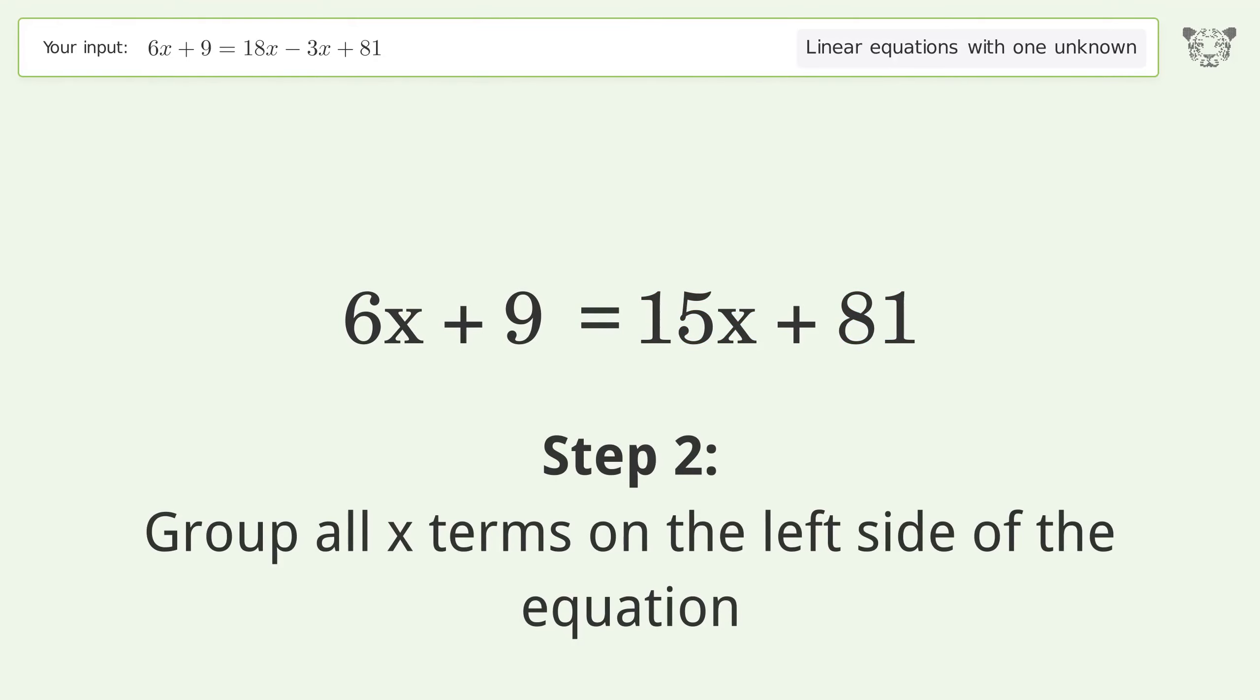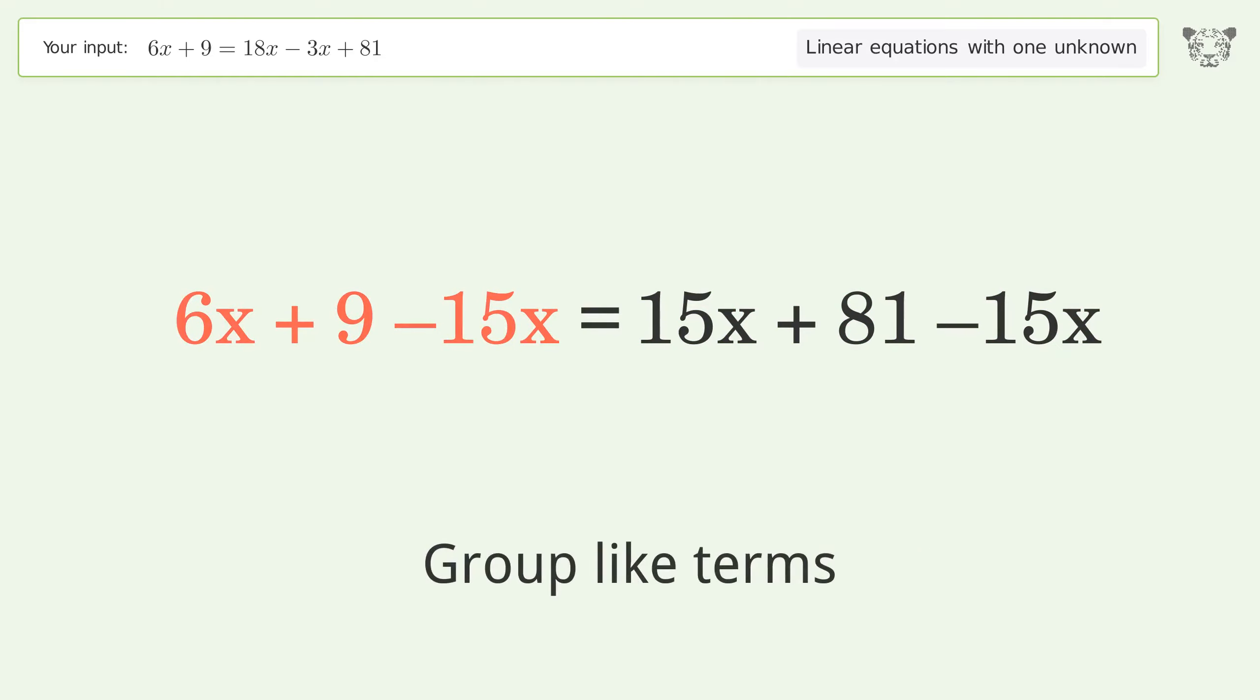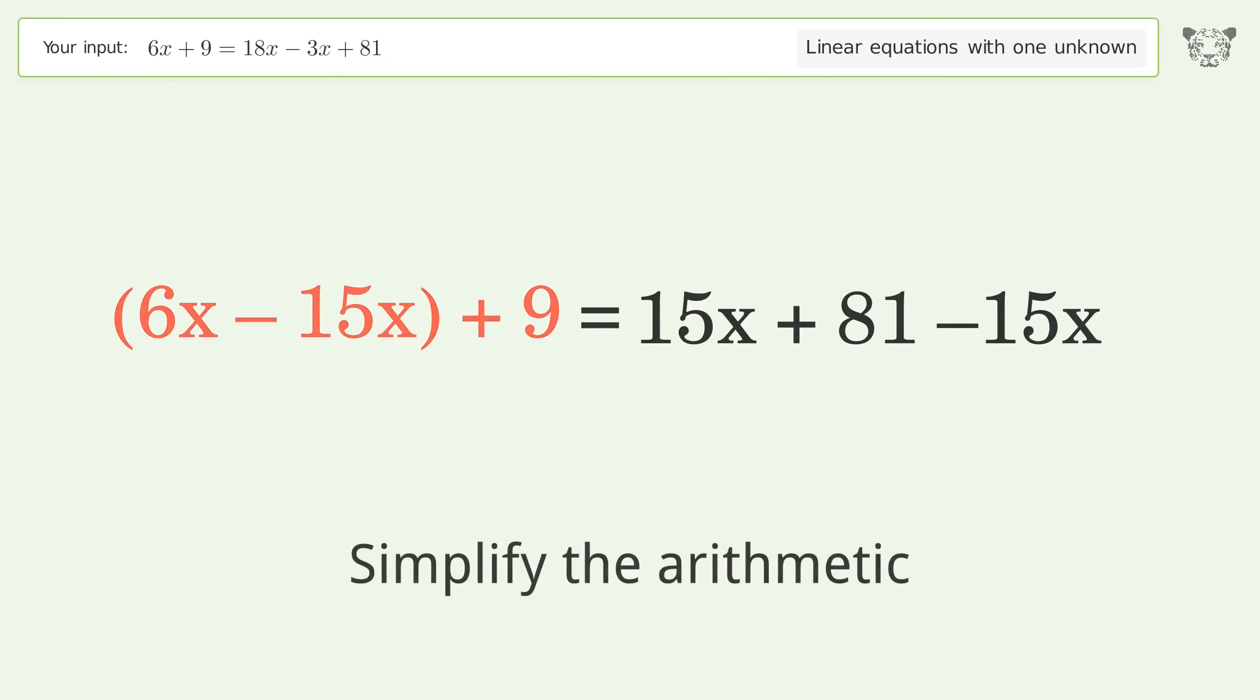Group all x terms on the left side of the equation. Subtract 15x from both sides. Group like terms. Simplify the arithmetic.